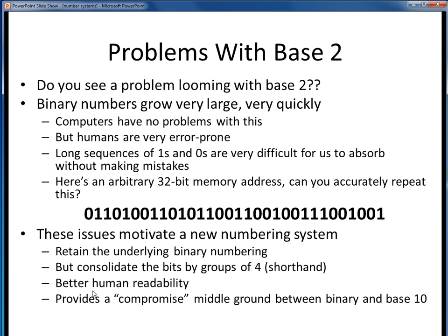What we want to do here is consolidate the ones and zeros into groups of four and come up with some more distinguishable symbols to represent them. This, of course, is what leads us to the base 16 or hexadecimal numbering system.